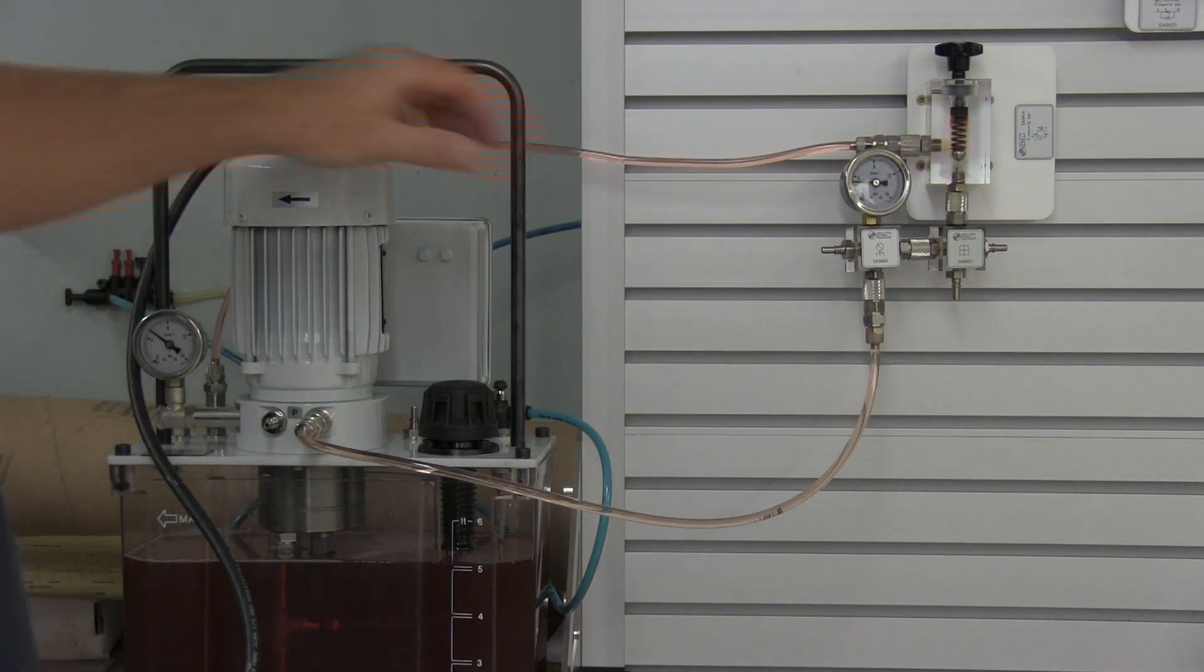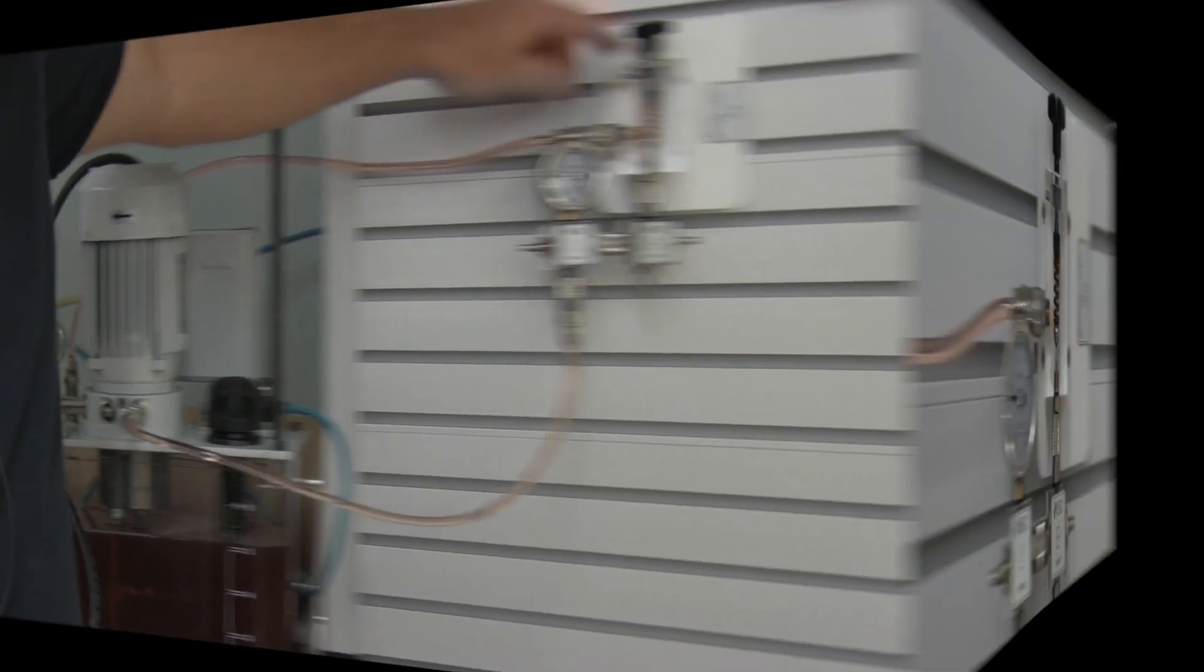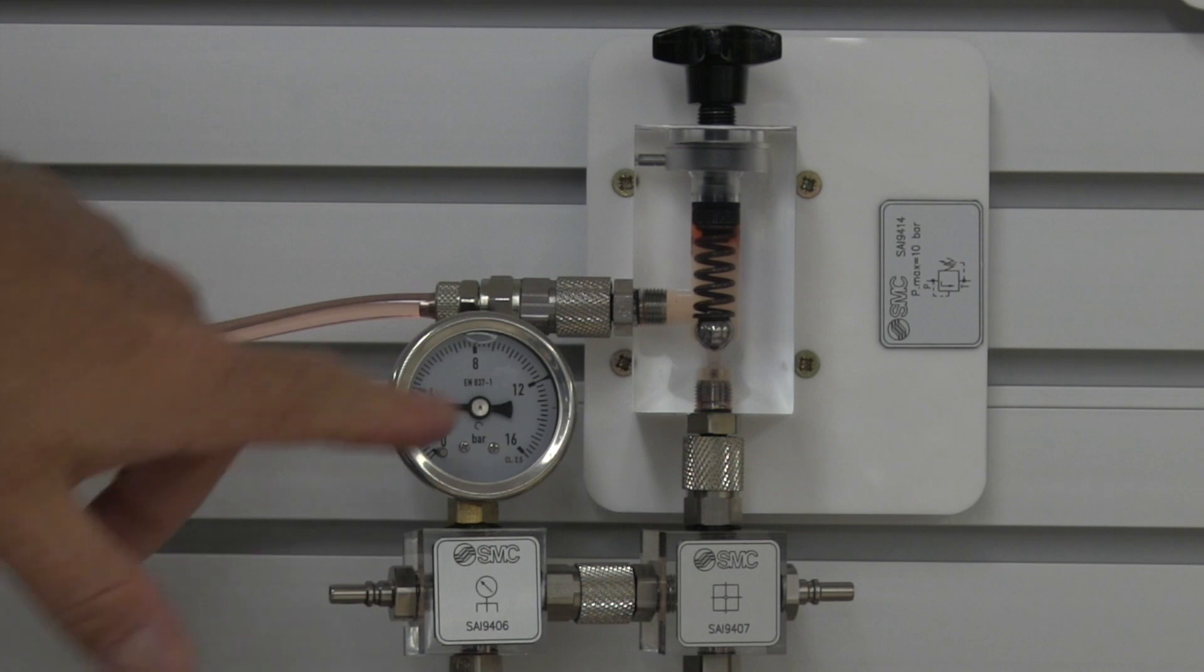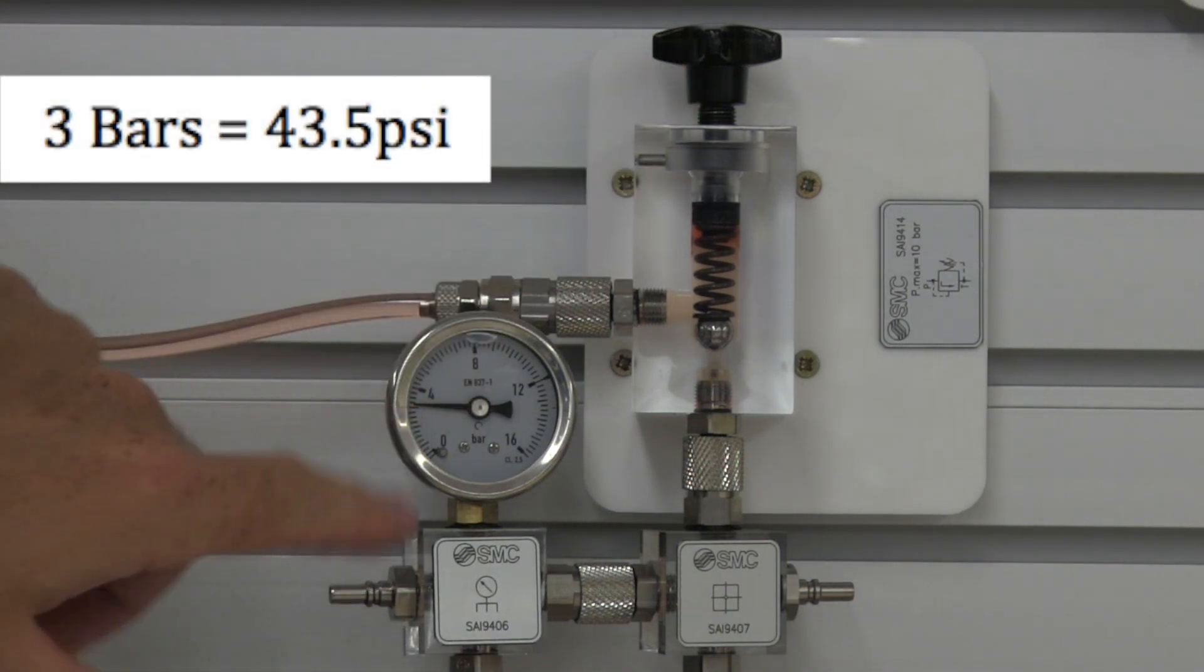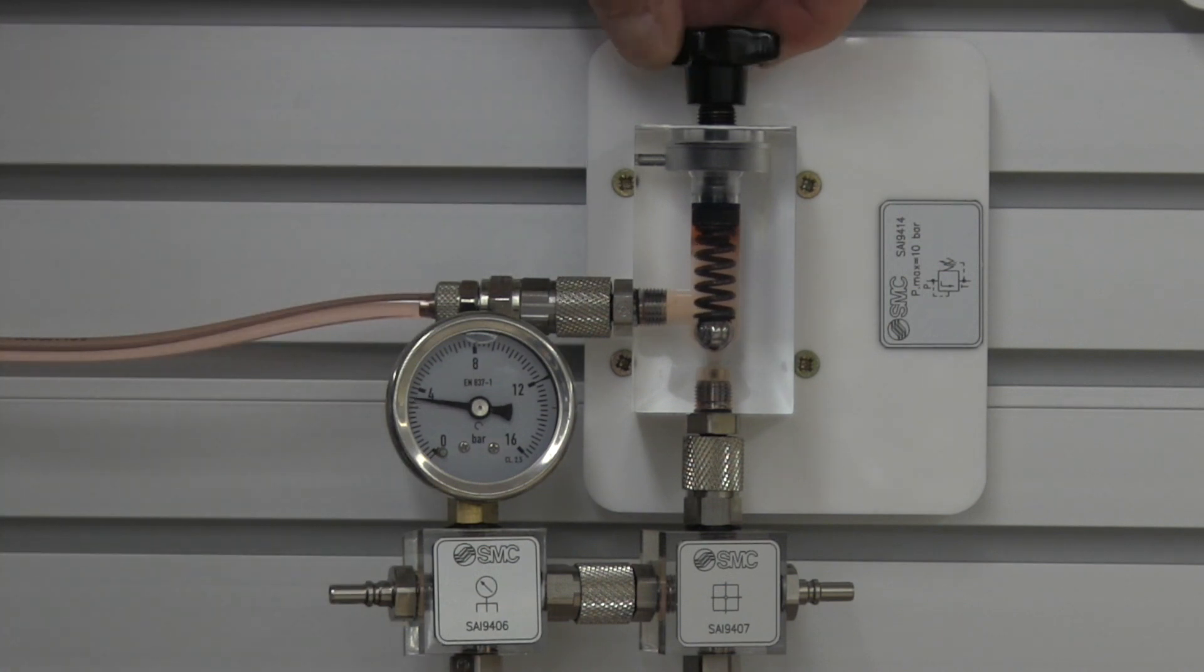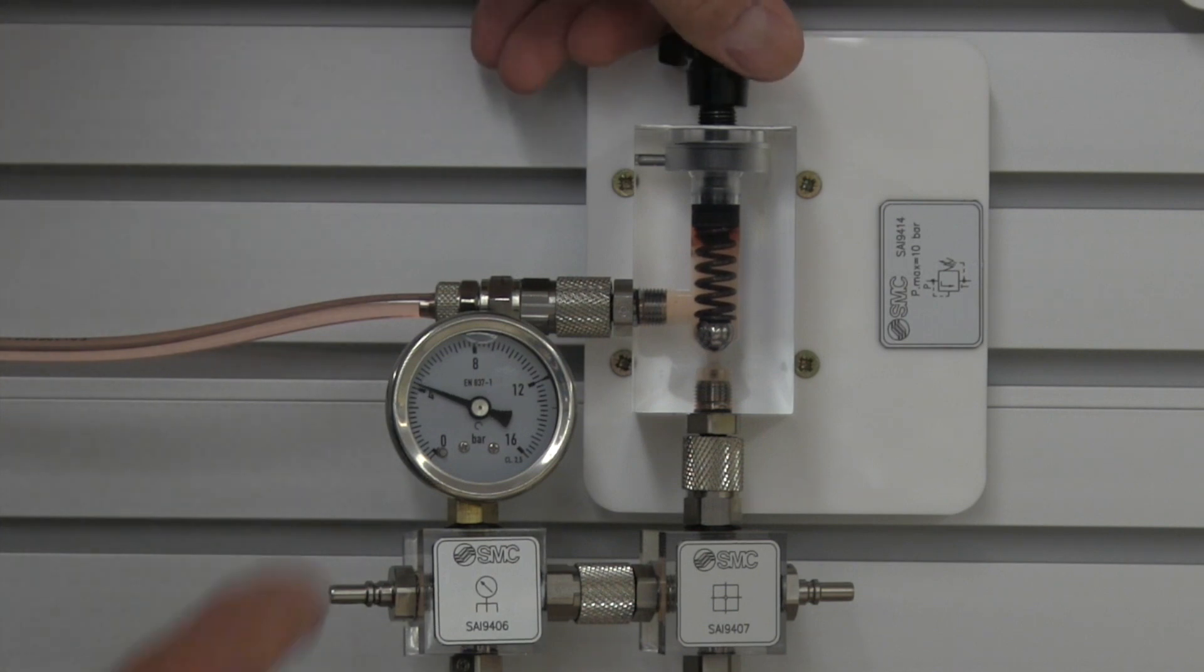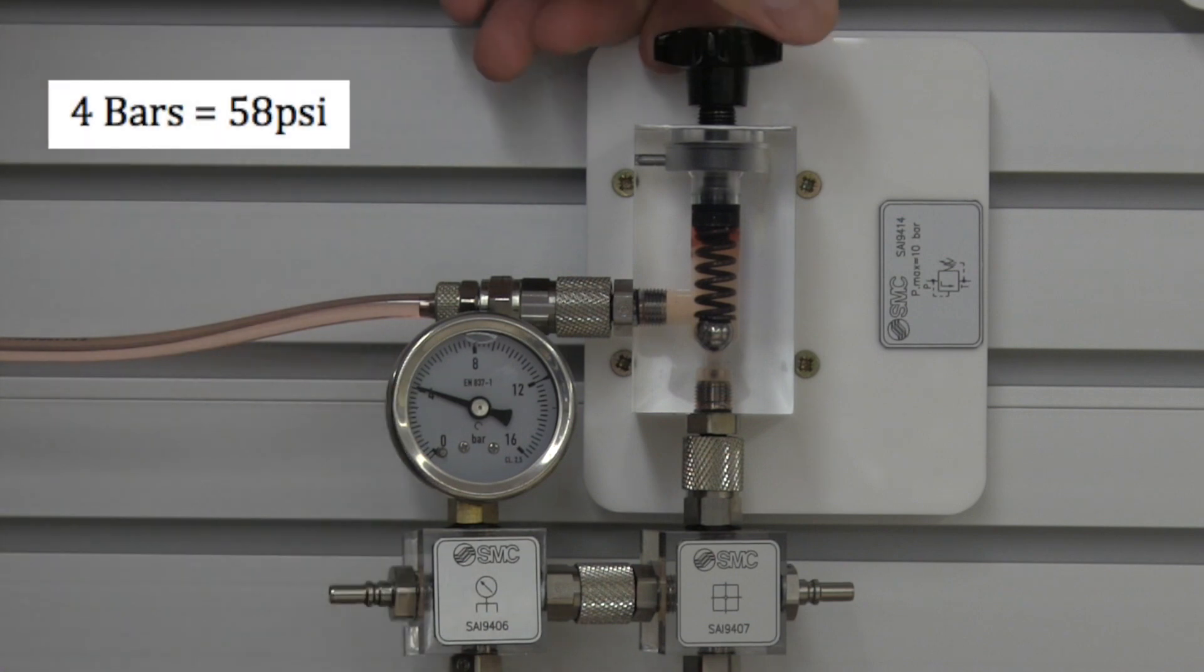So I'm going to zoom in on the pressure relief valve so you can see how it operates. You can see here that the minimum this is set up to run is three bars. And as I start to twist this down and adjust it, the pressure starts to rise. So now I'm at four PSI.